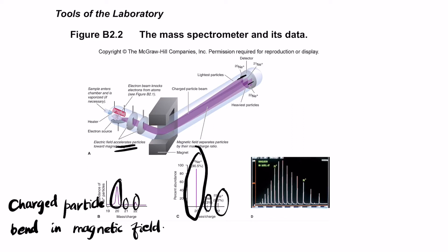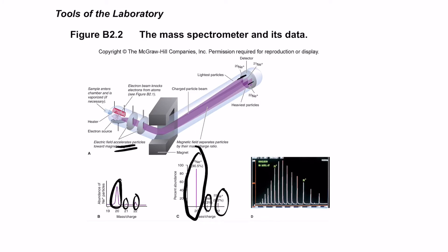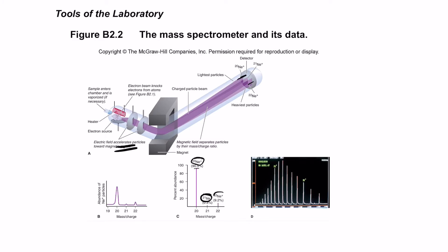Once the detector gives a result, the abundance of the particles — the number hitting a particular part — can be calculated as a percentage. So neon-20 is about 90.5%, neon-21 is 0.3%, and neon-22 is 9.2%. This means an atom of neon does not consist of one single isotope but multiple isotopes. So how do you calculate the atomic mass of neon?